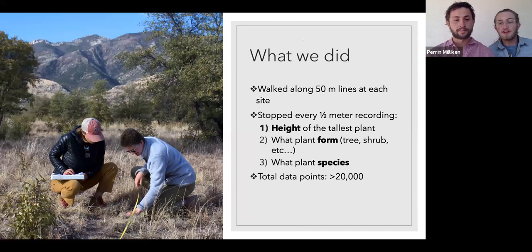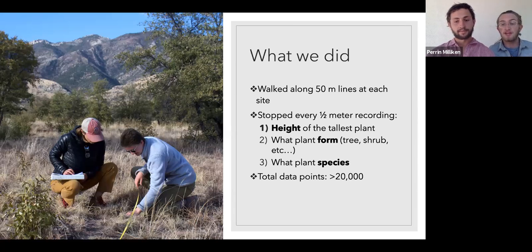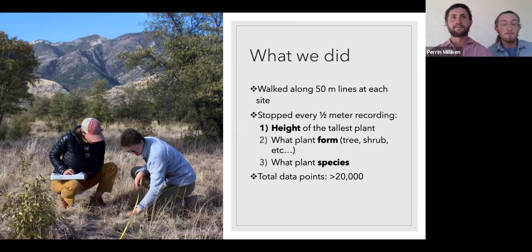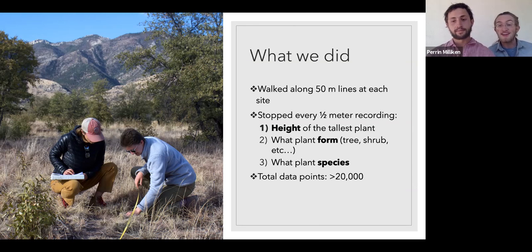Our procedure while doing these vegetation surveys: we were primarily out there to collect SD cards and bring back photos to Sky Island Alliance, changing batteries on the cameras to maintain them. The main thing we were doing was running 50-meter transect tapes along the ground, radiating out in each of the four cardinal directions away from the camera, and in some circumstances an additional transect in the line of sight of the camera. We would walk along these transects, stopping every half meter to record the height of the canopy, what plant form was present — whether it was a tree, shrub, succulent, or grass — and specifically what plant species we saw. Over the month that we at Round River Conservation Studies were surveying, we collected over 20,000 data points.